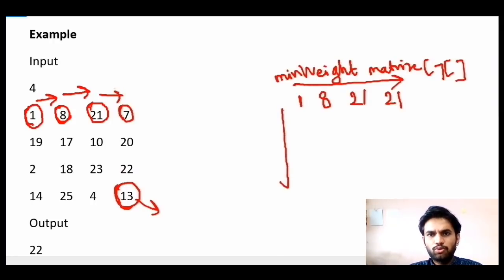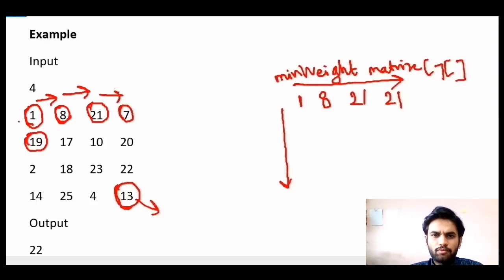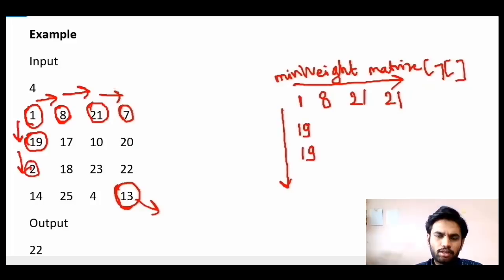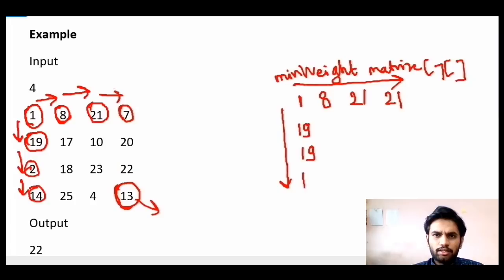Now let us fill the first column. For position with weight 19: the only way is to come down from the first intersection, so we exchange — minimum weight is 19. For the next position down (weight 2), minimum weight remains 19. For the position after that (weight 14), minimum weight remains 19. So we have now filled the first row and first column of the minimum weight matrix.